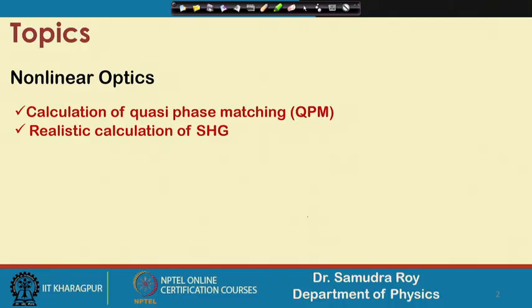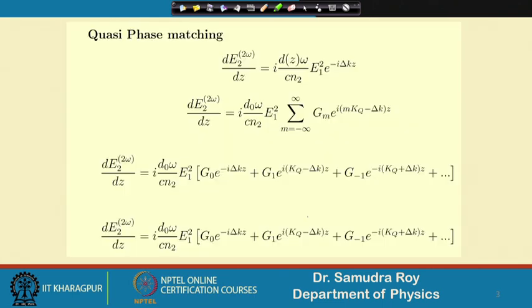Today we have two topics to discuss: one is the calculation of quasi phase matching, and second is the realistic calculation of second harmonic generation. The realistic calculation of second harmonic generation is a different part that we will start today, but let us first find out what the quasi phase matching calculation is.